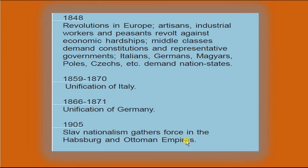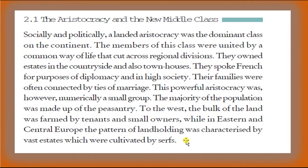The Revolutions of 1848 involving artisans, industrial workers, and peasants were studied in detail. Then the unification of Germany and the unification of Italy. We also studied aristocracy — people belonging to the first and second estates, the rich. The middle class population arose purely because of the Industrial Revolution. Because the middle class was highly educated, they started rebelling against the old system.